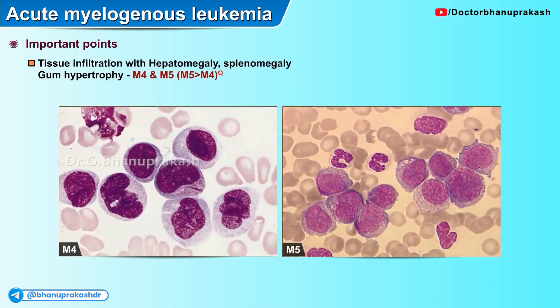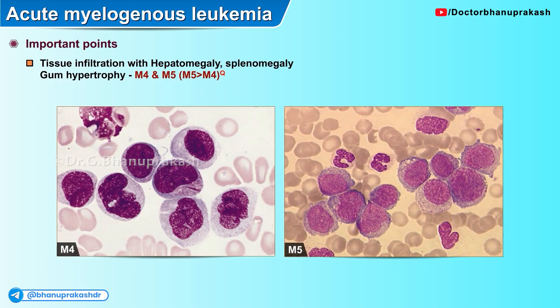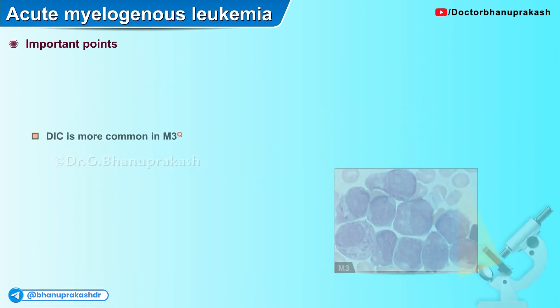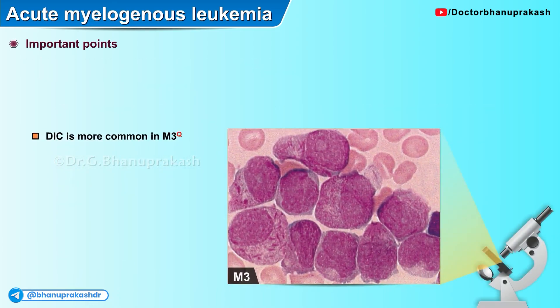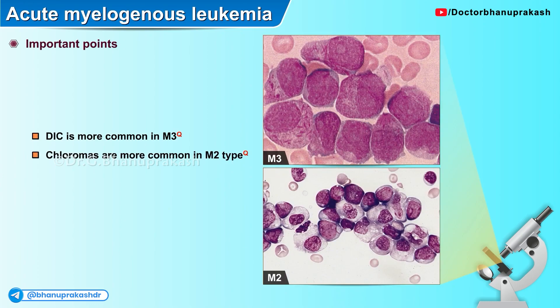Tissue infiltration with hepatomegaly, splenomegaly, and gum hypertrophy is seen with M4 and M5 variants of acute myelogenous leukemia. Disseminated intravascular coagulation is more common in the M3 variant. Chloromas are more common in the M2 variant, and sometimes non-specific esterases may become positive in the M3 variant of AML.